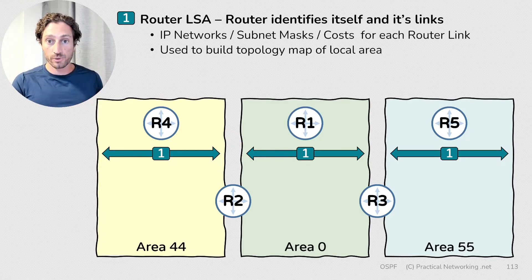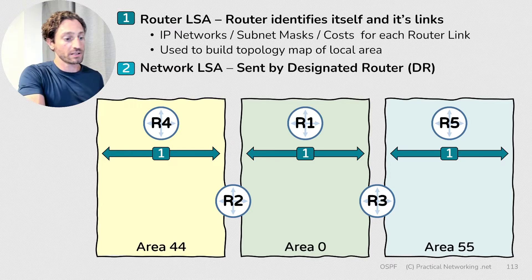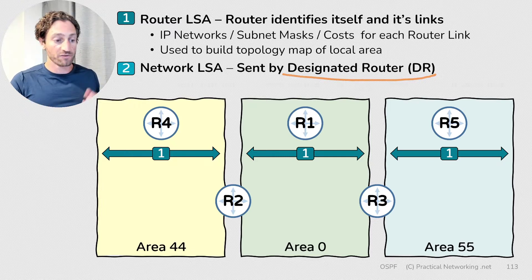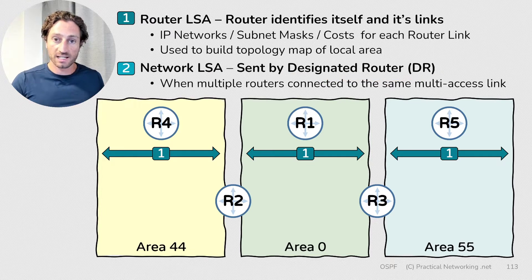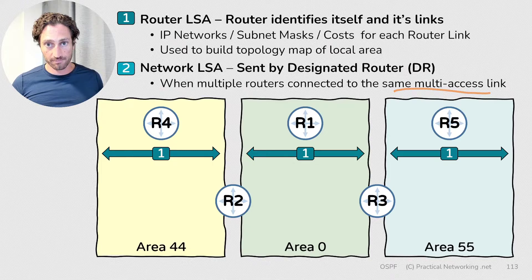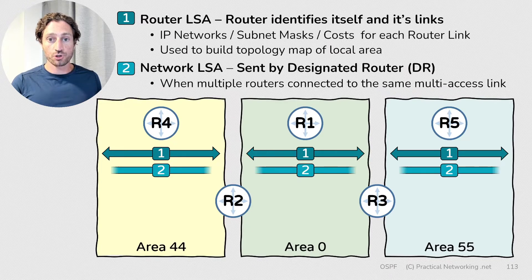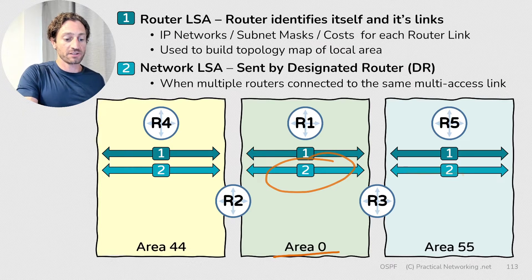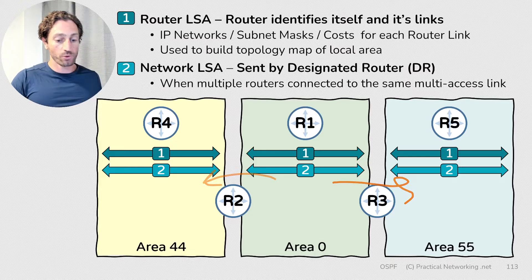Which brings us to Type 2 LSAs. Type 2 LSAs are known as Network LSAs, and they're going to be sent by any designated router, but only if multiple OSPF routers are connected to the same multi-access link. Just like Type 1 LSAs, Type 2 LSAs are also confined to the local area, which means the Type 2 LSAs in Area 0 will not make their way into Area 44 or Area 55.